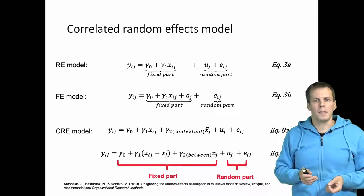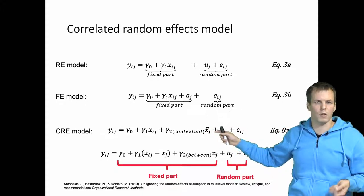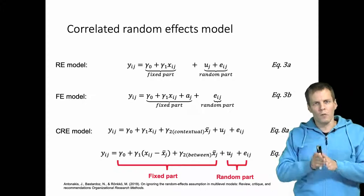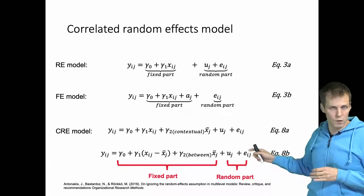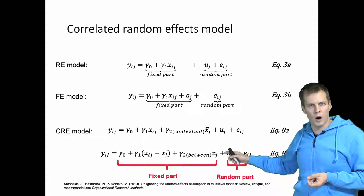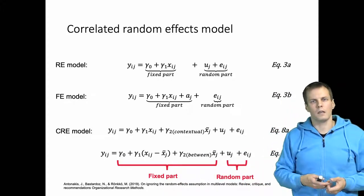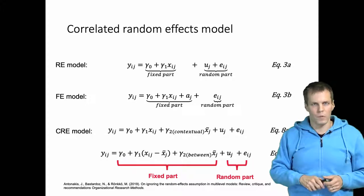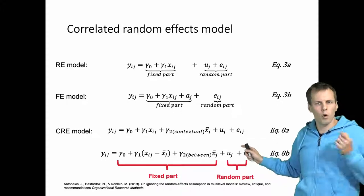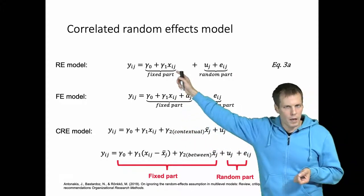Why does this not require the unobserved term to be uncorrelated with the predictors? The reason is that if we add X-bar, the cluster mean, as a predictor, including that predictor in the model will account for any level two effect that the unobserved term would have. So if X is correlated with U, then adding X-bar as a control will make U and X conditionally independent from one another. The CRE correlated random effects model will always give you the within effect for X, the same estimate as the fixed effects model.